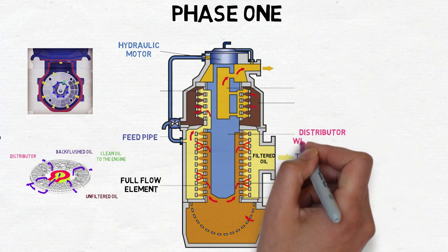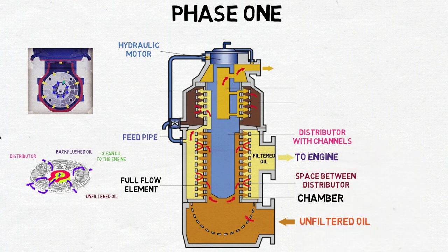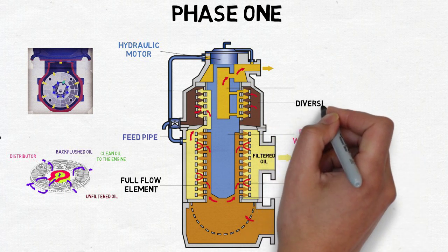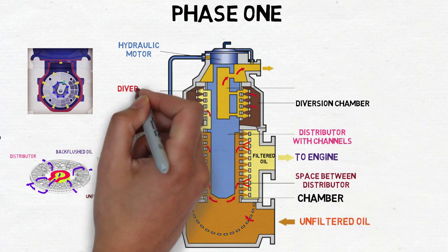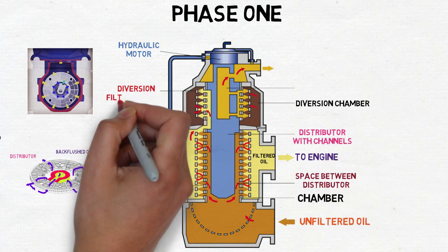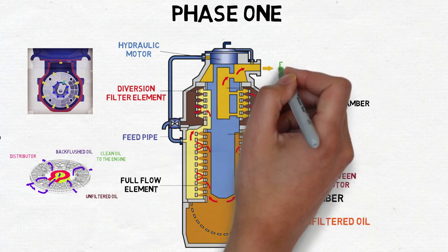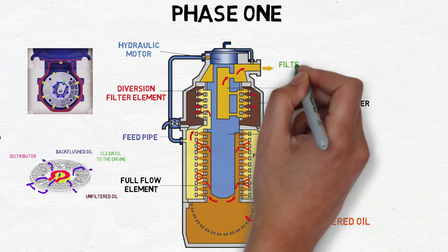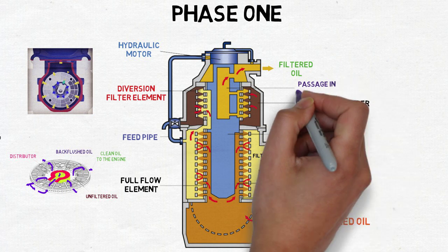The back flushing oil with its solid passes through the channel in the distributor to the diversion chamber. The back flushing oil passes from the diversion chamber through the diversion filtering elements to the passage in the distributor. Filtered oil is taken back through the passage in the distributor via outlet.